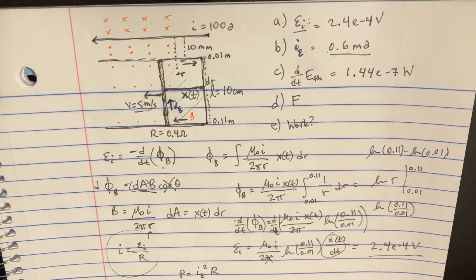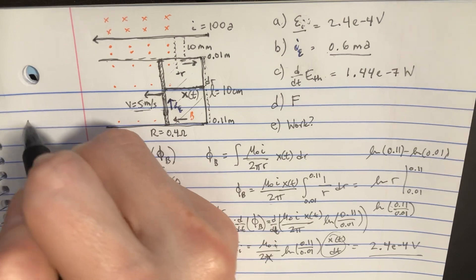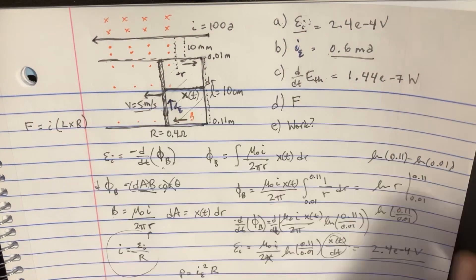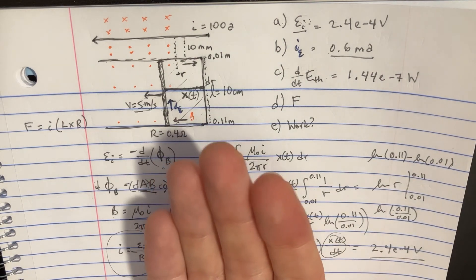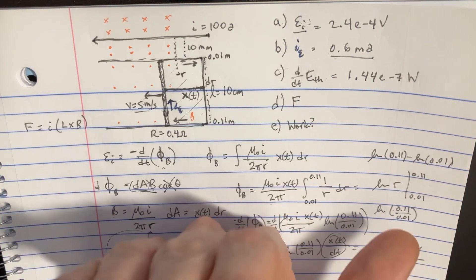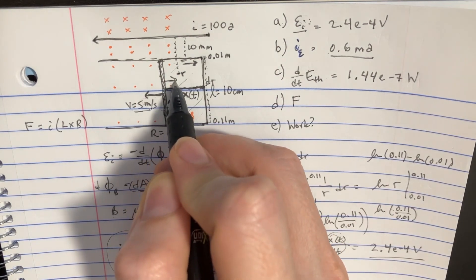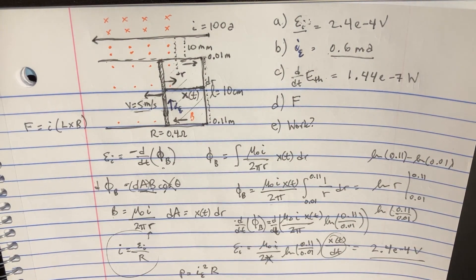So if I cross that, remember that the force is going to be I, and then there's like L cross B. So if I try to cross that with the field, it's going to go inwards. So that's kind of where the force is pointing. There's the force.